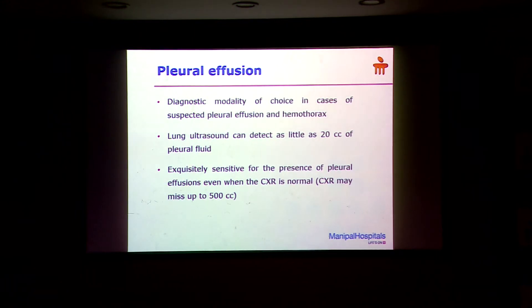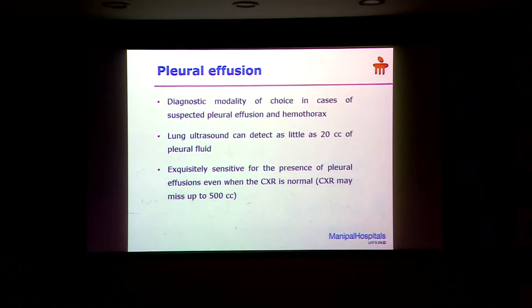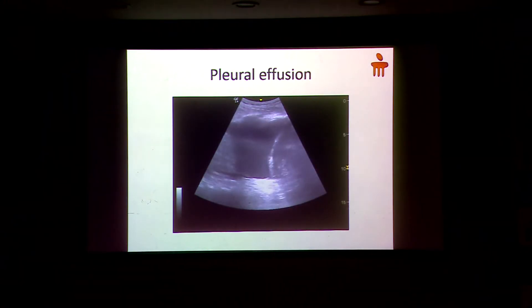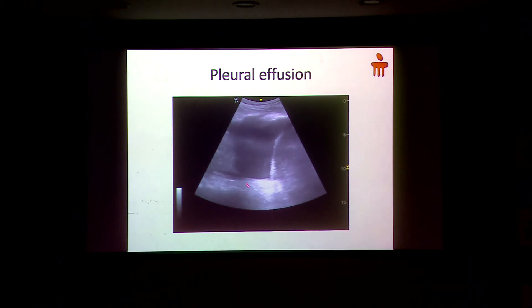What about pleural effusion? Ultrasound for water is very, very sensitive — even 20ml of water, ultrasound will be able to detect. Whereas with a chest X-ray, you need around 300ml. So ultrasound is the best modality to diagnose pleural effusion. This is the picture — this is the diaphragm, this may be the spleen or liver depending on which side, this is the collapsed lung, and this black thing you see is the fluid. This patient has an obviously large pleural effusion, but even very small effusions will be identifiable.